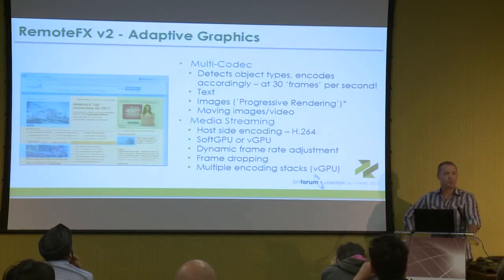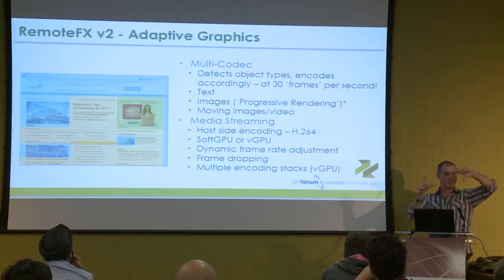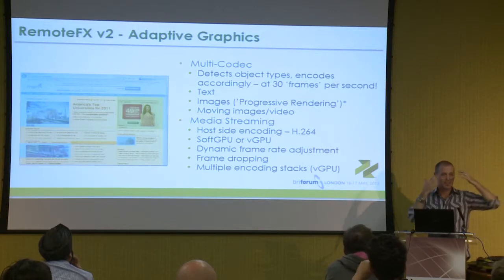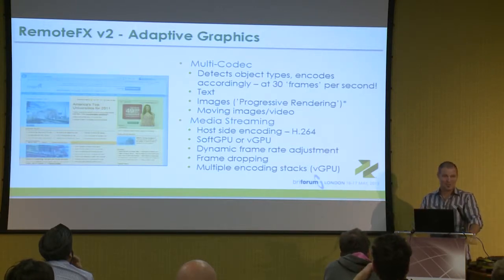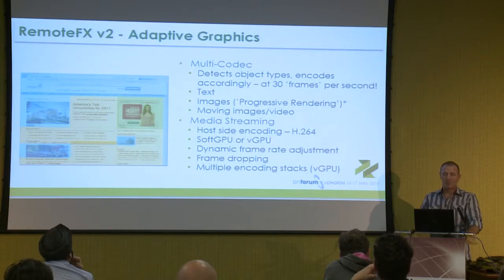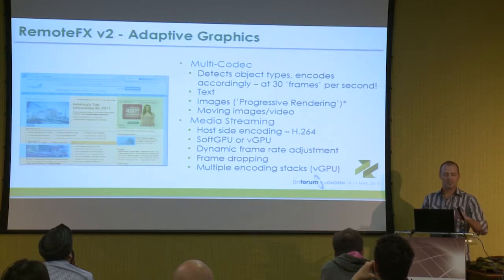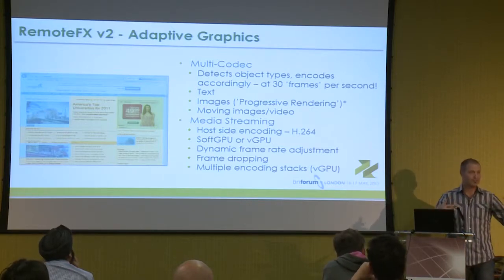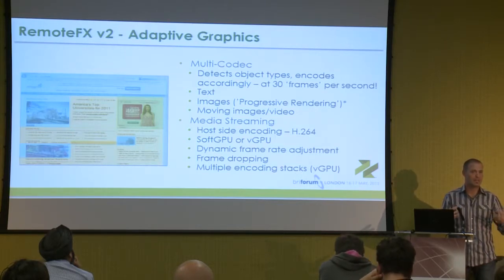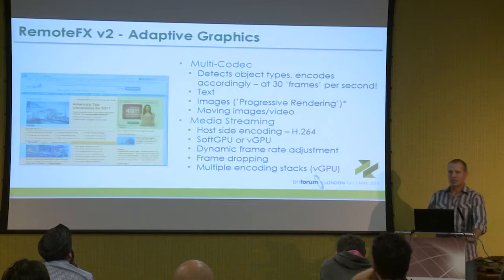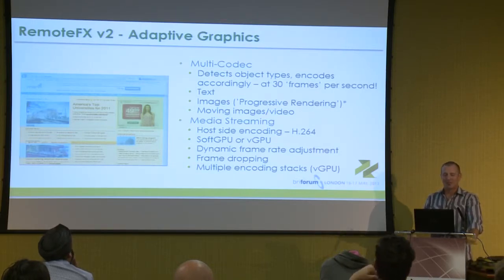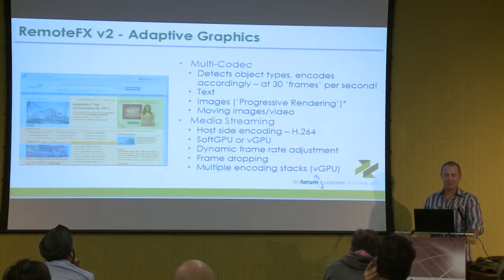With progressive rendering, when they've got a still image they can take it, drop the quality, send a quick frame down, and then progressively make it look better. As you're interacting with a session it's actually pretty easy to pick out and see that. Their goal with the multi-codec and ability to pick out three different content types is keeping the text elements - they compress those using a codec that does a good job with text, delivering them at full fidelity immediately. So text content is going to be rendered at full fidelity quickly even in a more limited bandwidth scenario.